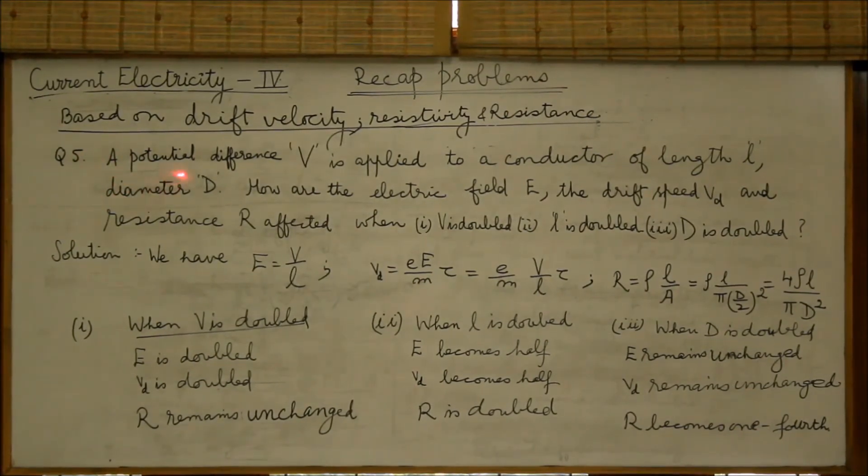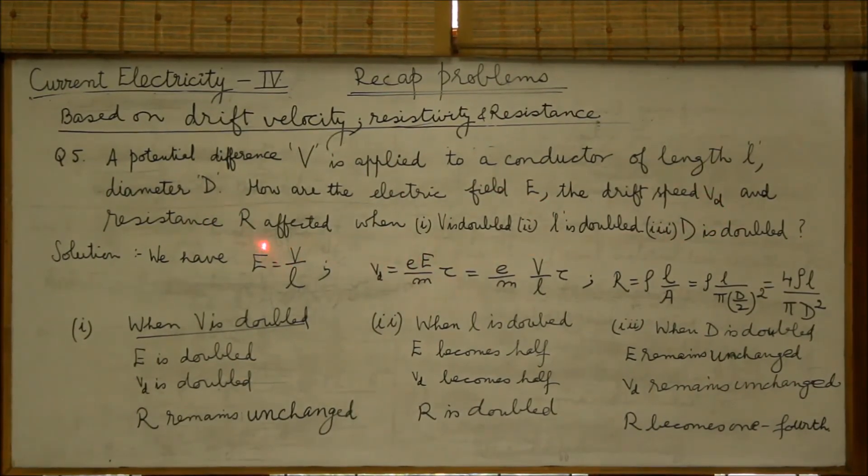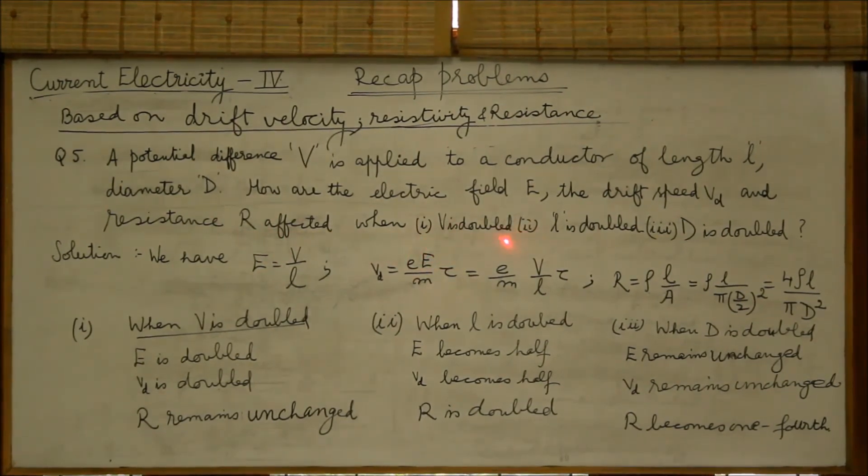Question number 5. A potential difference V is applied to a conductor of length L, diameter D. How are the electric field, the drift speed, and the resistance affected when V is doubled, L is doubled, D is doubled?